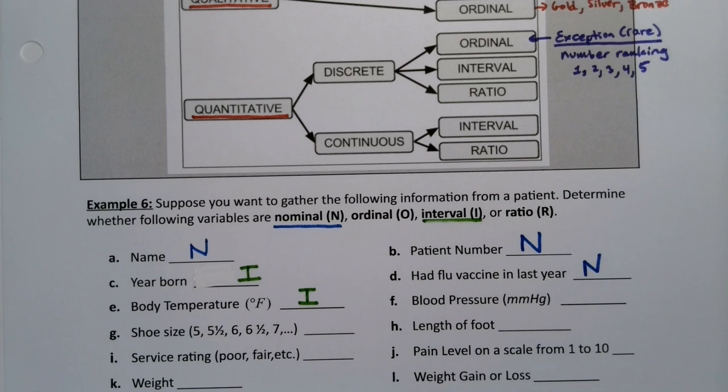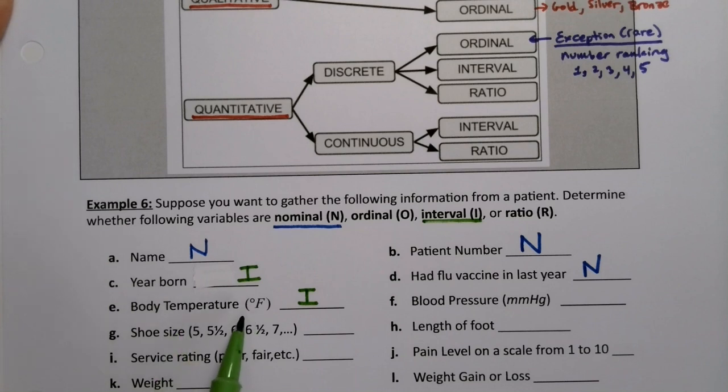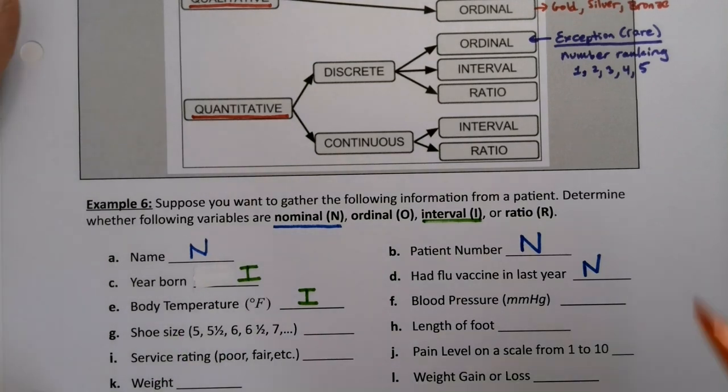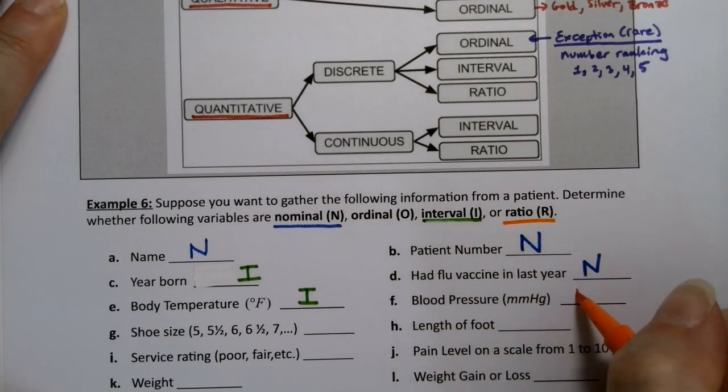Blood pressure. Well, blood pressure has an absolute zero. You're dead. You have no blood pressure. So it's millimeters of mercury. That doesn't have negative values. You can't have negative millimeters of mercury, whereas you can with degrees Fahrenheit. So we'll give that one an R.